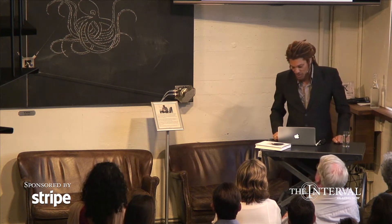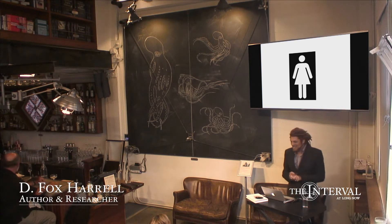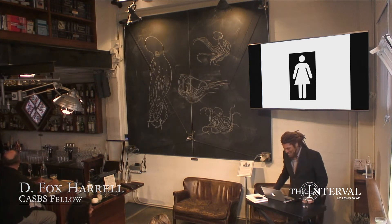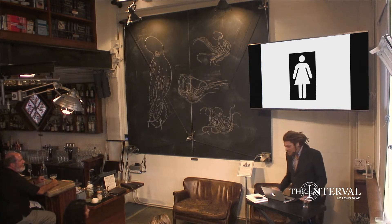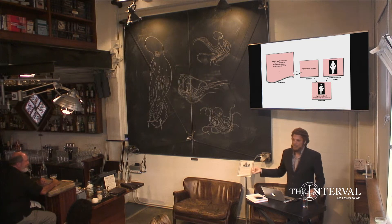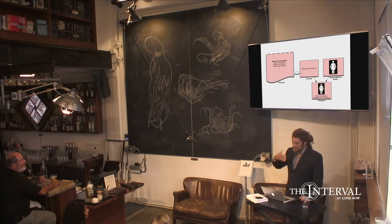So we'll start with a kind of challenging question: what does this sign mean? Someone said 'woman.' So it's not controversial for many people, but the question is how do we make sense of this particular sign? We're drawing upon a particular worldview and specific concepts from that worldview that are being integrated with the sensory mental image. We have a mental image of what the sign could represent, and we immediately understand that sign as meaning something like 'woman' or referring to the fact that this is a place that women can be.